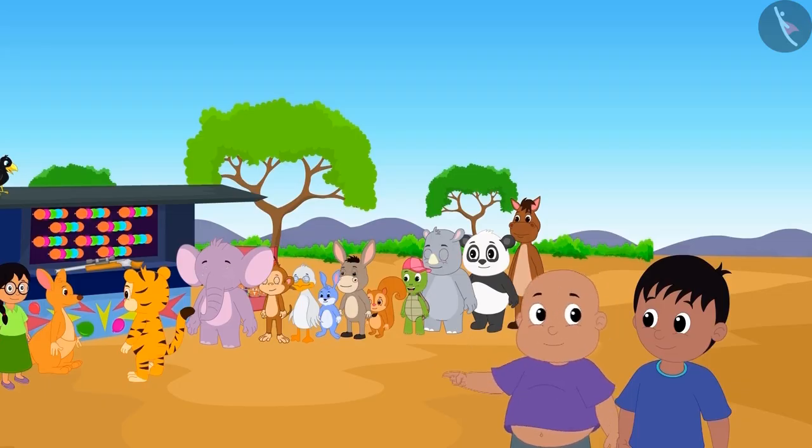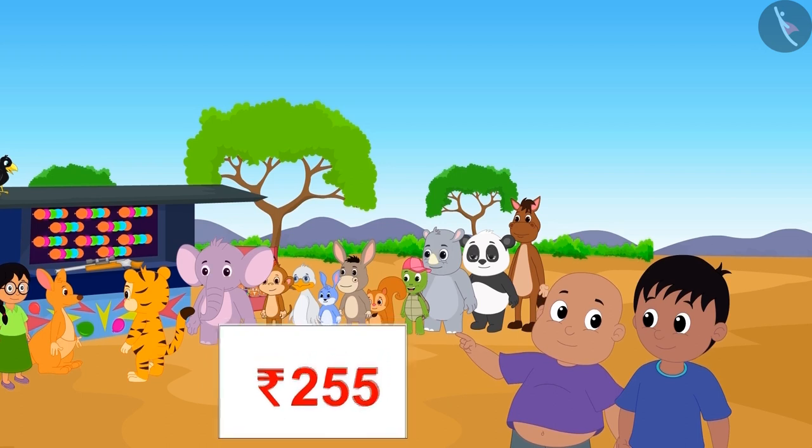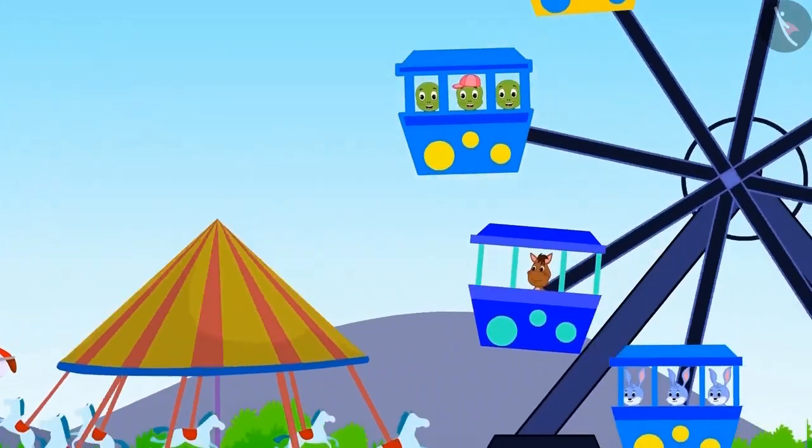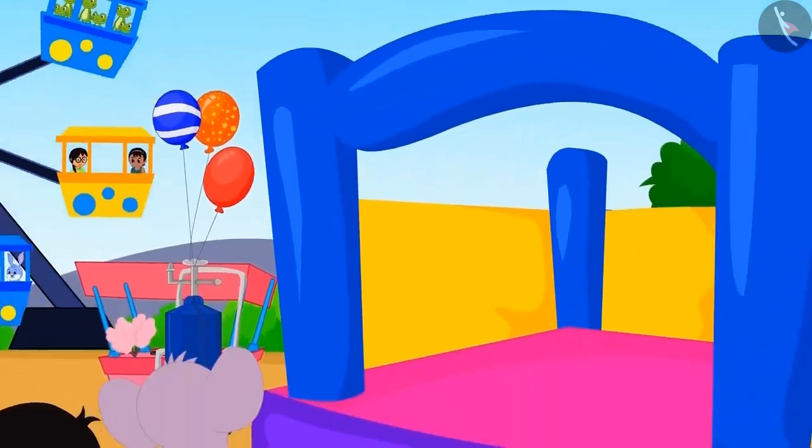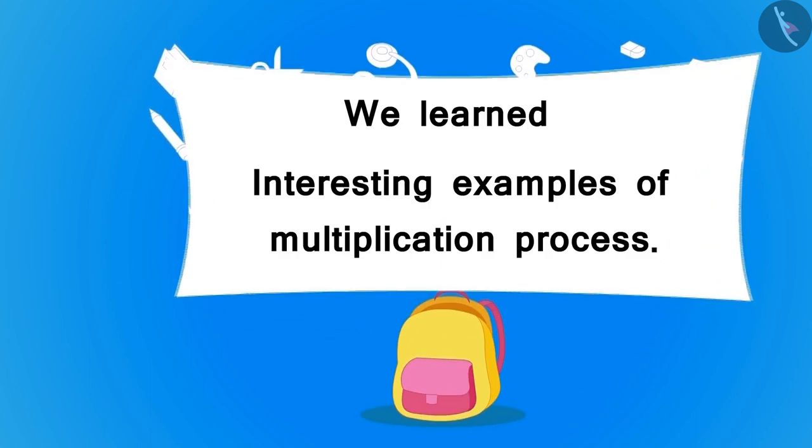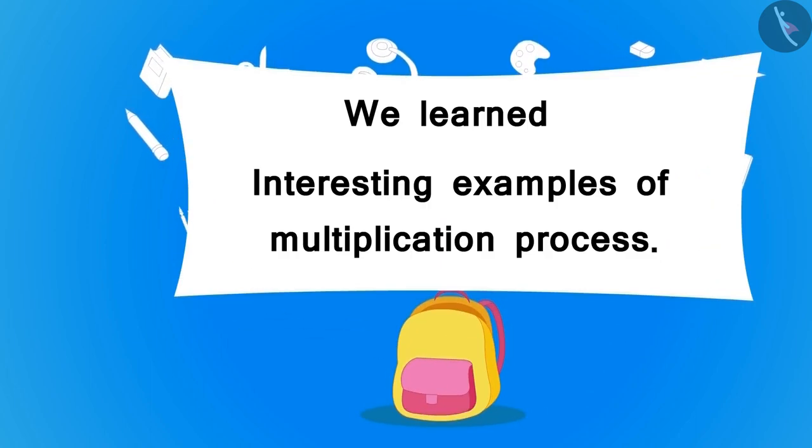Raju and Bablu will have to pay a total of 255 rupees. Raju and Bablu and their friends had a lot of fun at the fair. Children, in this lesson we have seen some interesting examples on the process of multiplication. In the next video we will see some common mistakes we make in the process of multiplication.